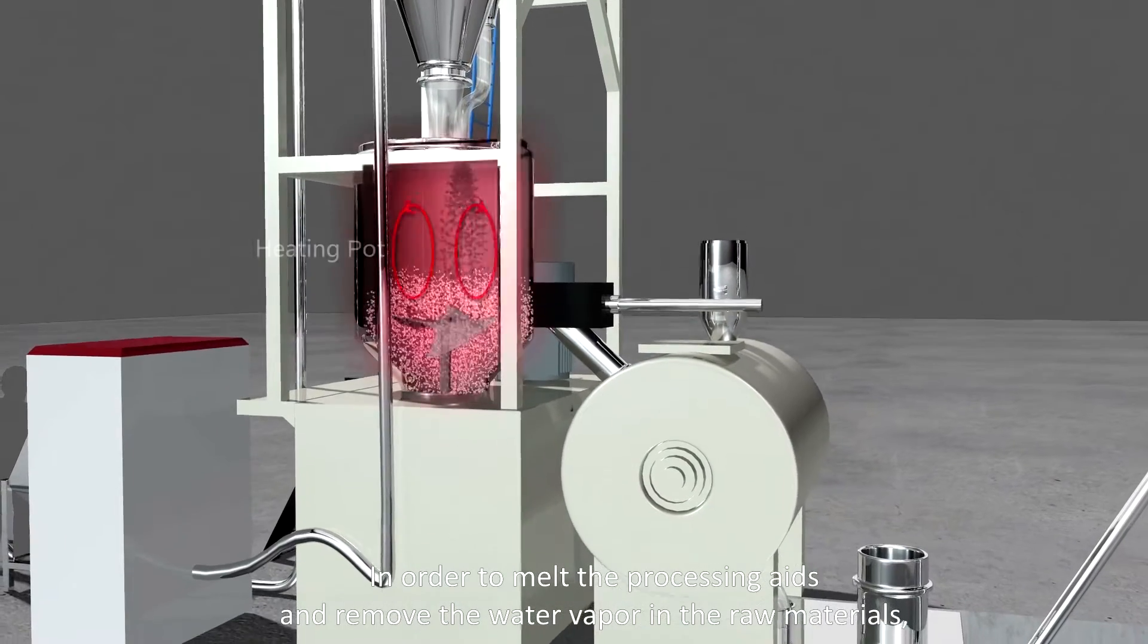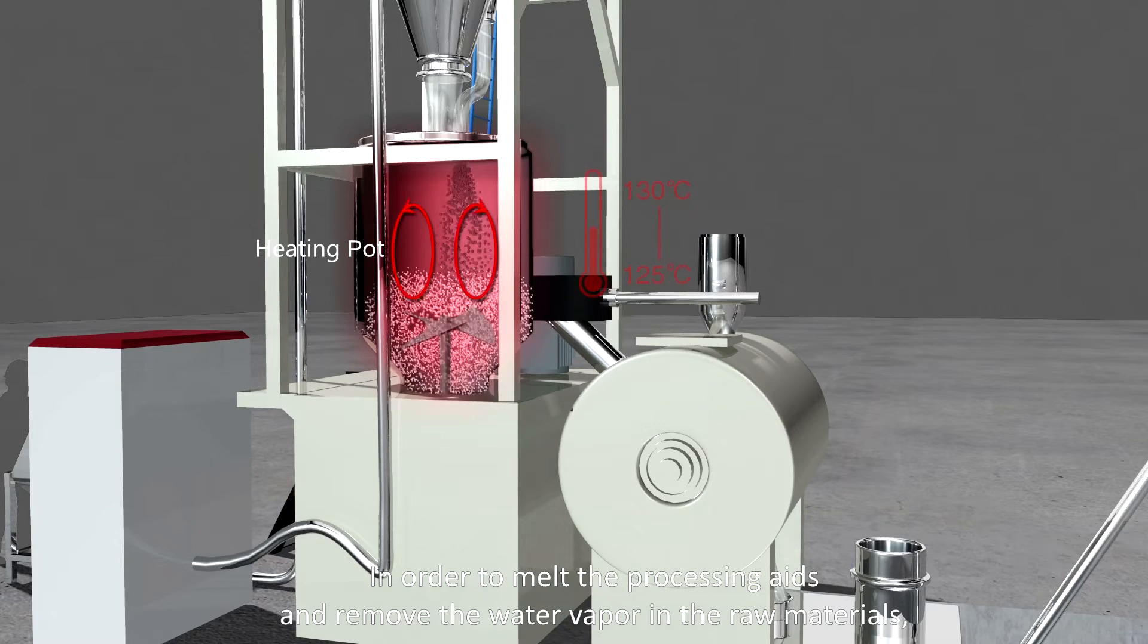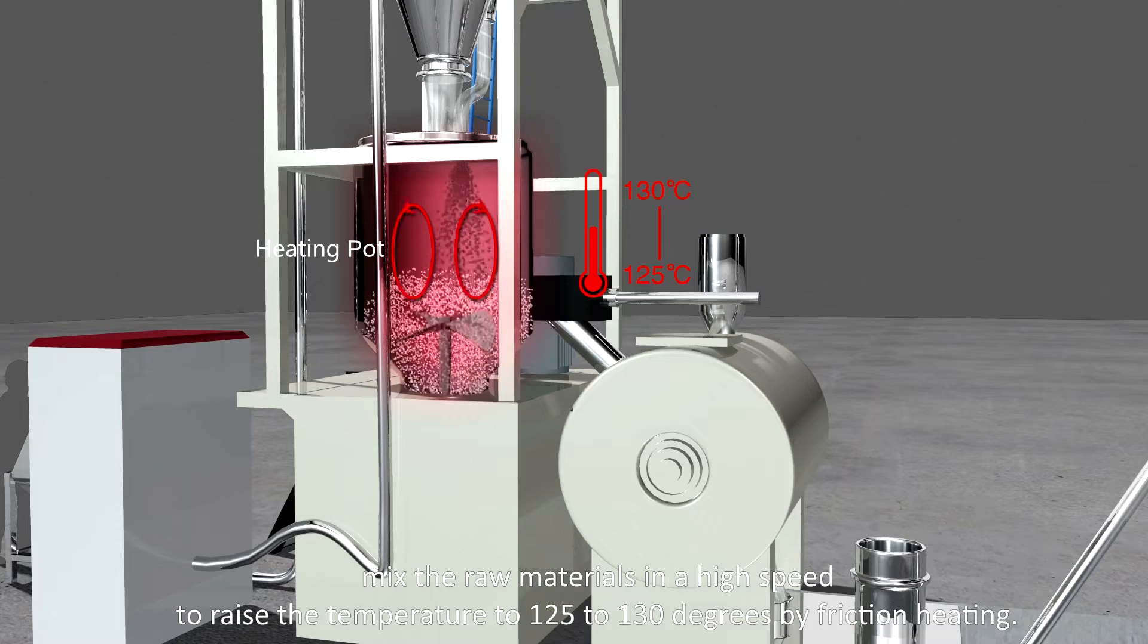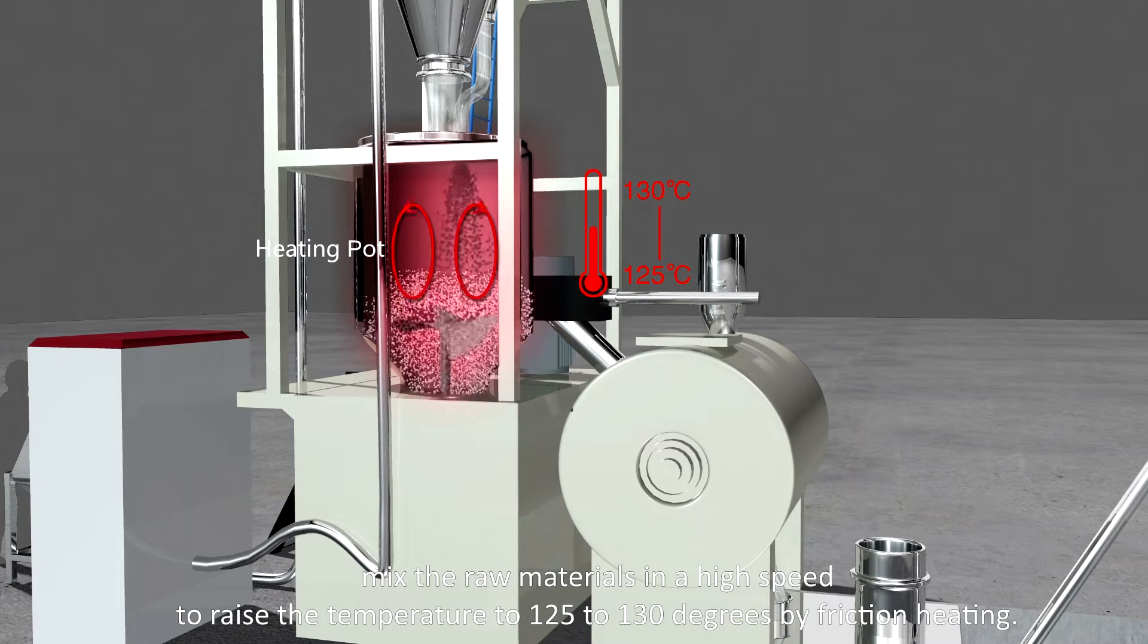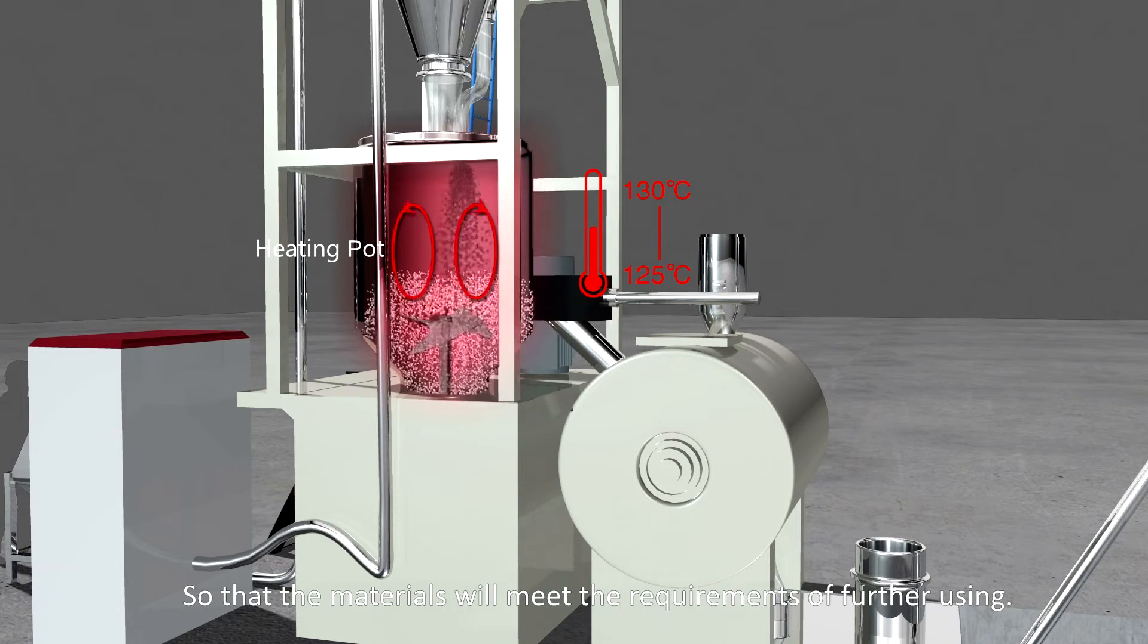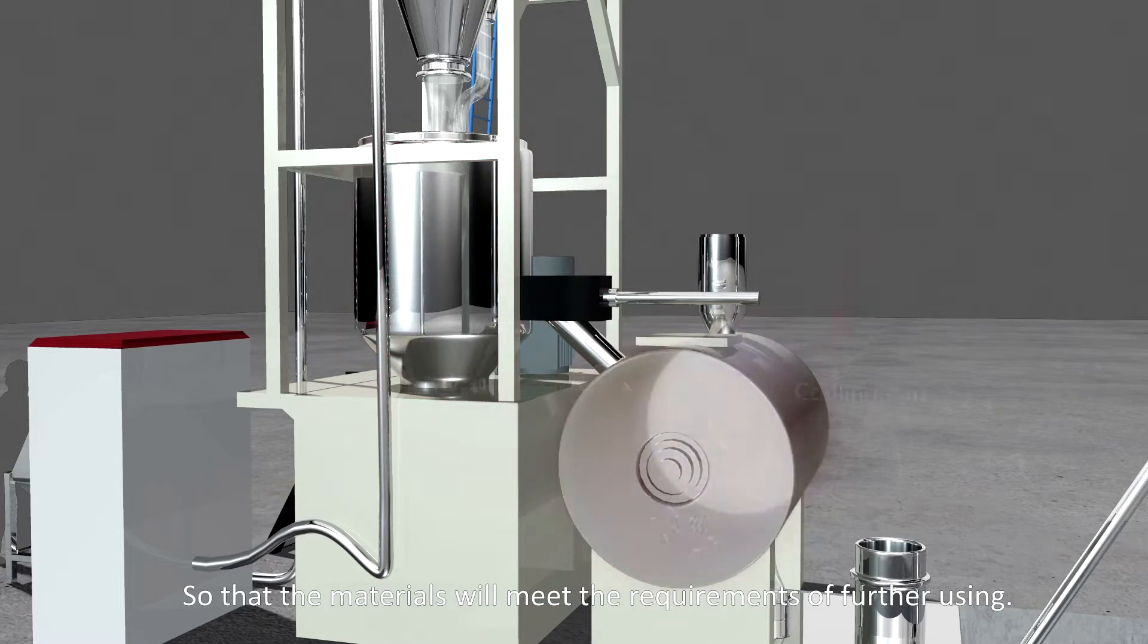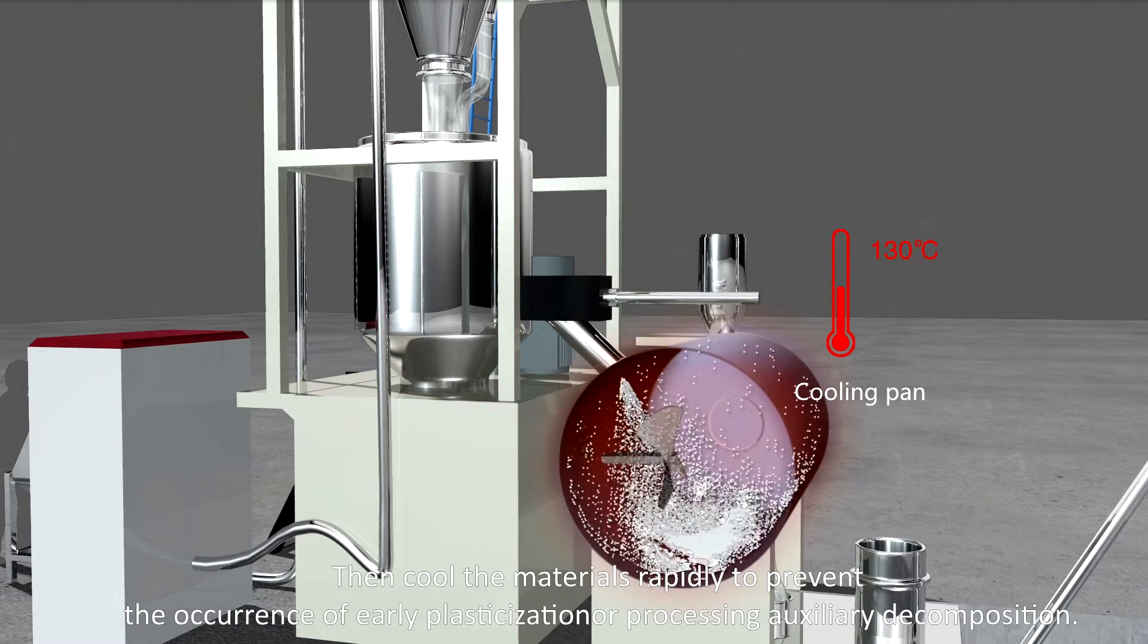In order to melt the processing aids and remove the water vapor from the raw materials, mix the raw materials at a high speed, and raise the temperature to 125 to 130 degrees by friction heating, so that the materials meet the required properties. Then cool the materials.